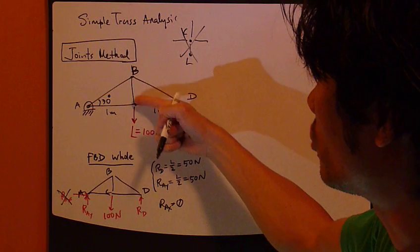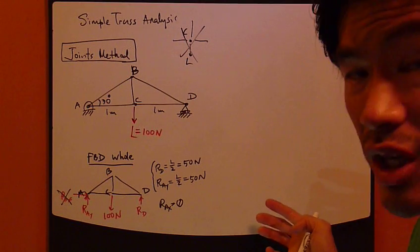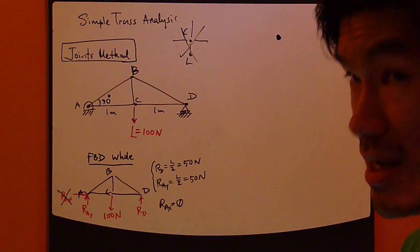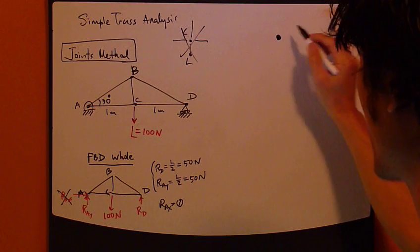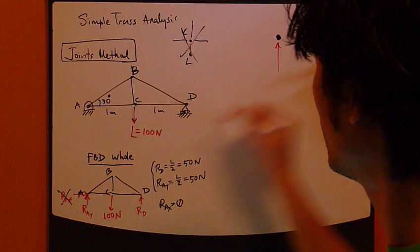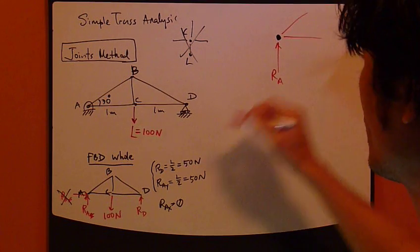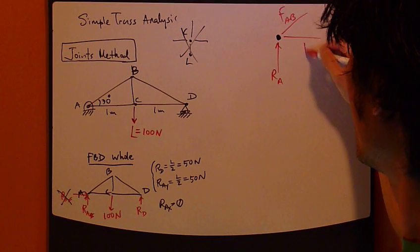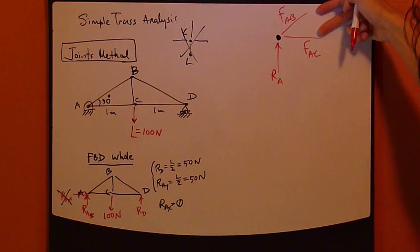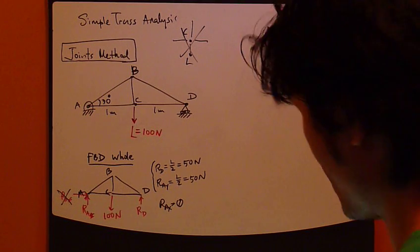What about joint B? Well, joint B has three unknown forces also - FBC, FAB, and FBD. That's no good either. Joint A - joint A is a good joint. Because joint A is subject to three forces total. RA, FAB, and FAC. So three forces - of the three, two are unknown, so it's okay. So joint A is a good joint to start with.